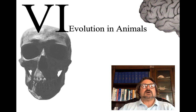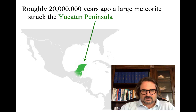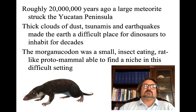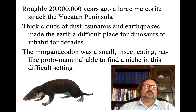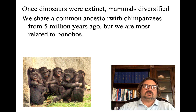Now let's talk about evolution in animals. Roughly 65 million years ago, a large meteorite struck the Yucatan Peninsula. Thick clouds of dust, tsunamis, and earthquakes made the earth difficult for dinosaurs to inhabit. The Morganucodon was a small insect-eating, rat-like proto-mammal, able to find a niche in this difficult setting — able to regulate its own temperature, not needing as much sunlight, good at finding and eating all sorts of things. Eventually the dinosaurs became extinct, and mammals diversified from this ancestor.